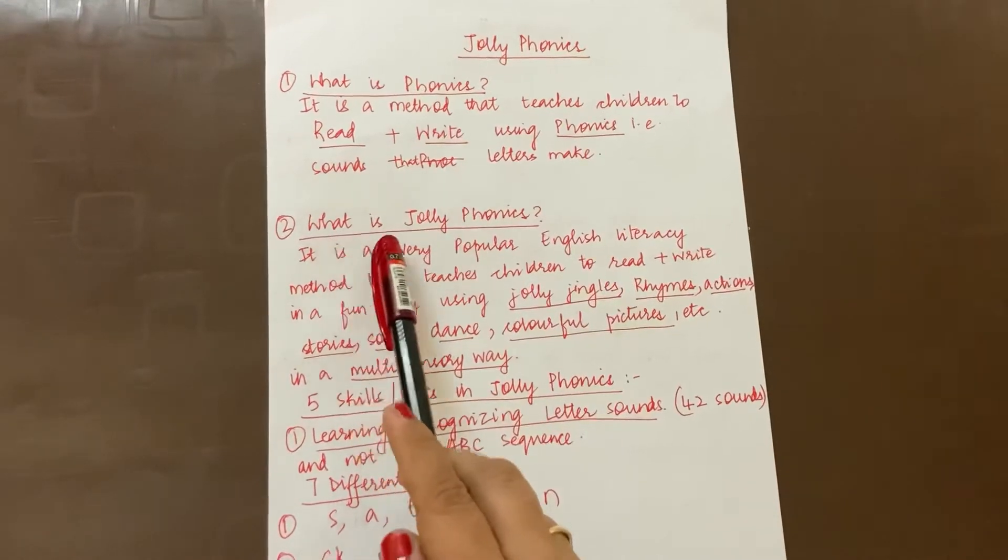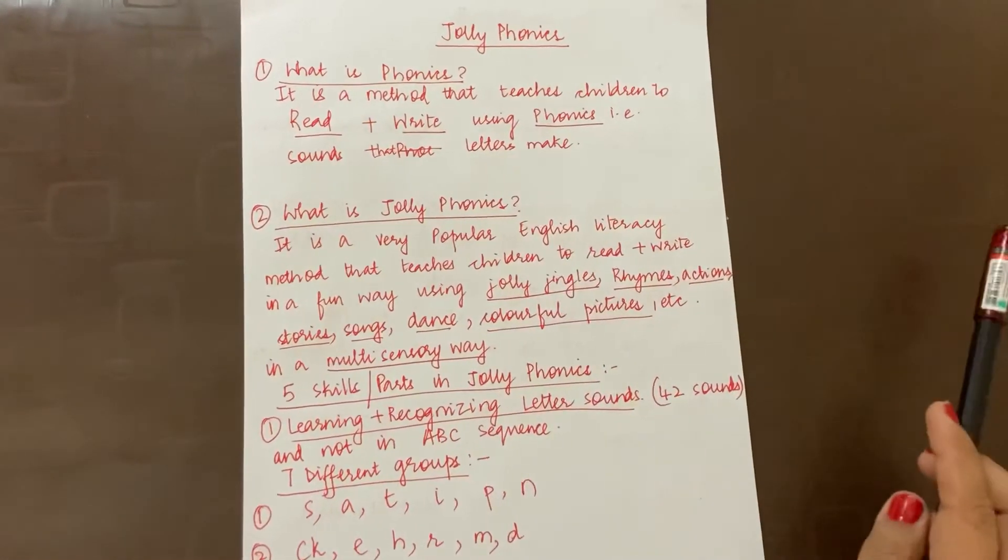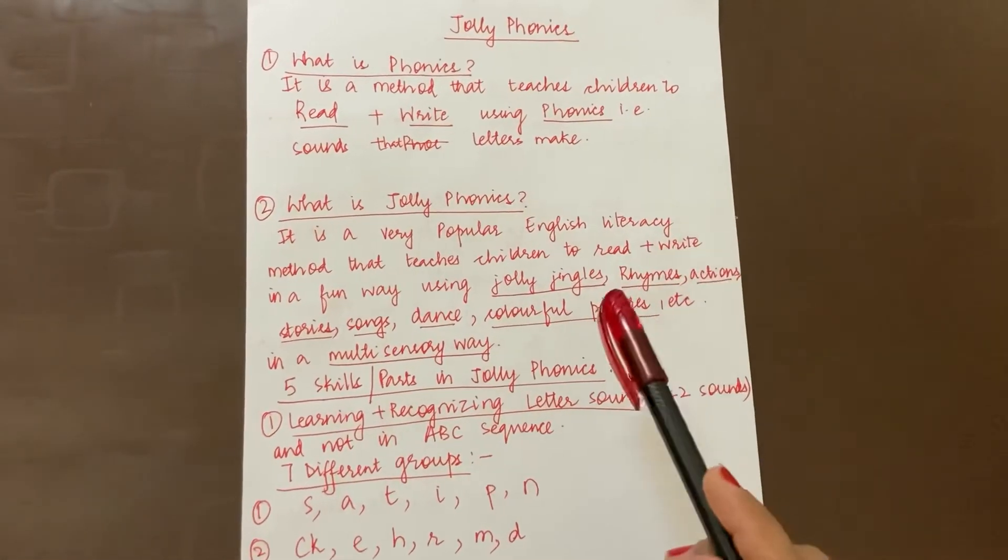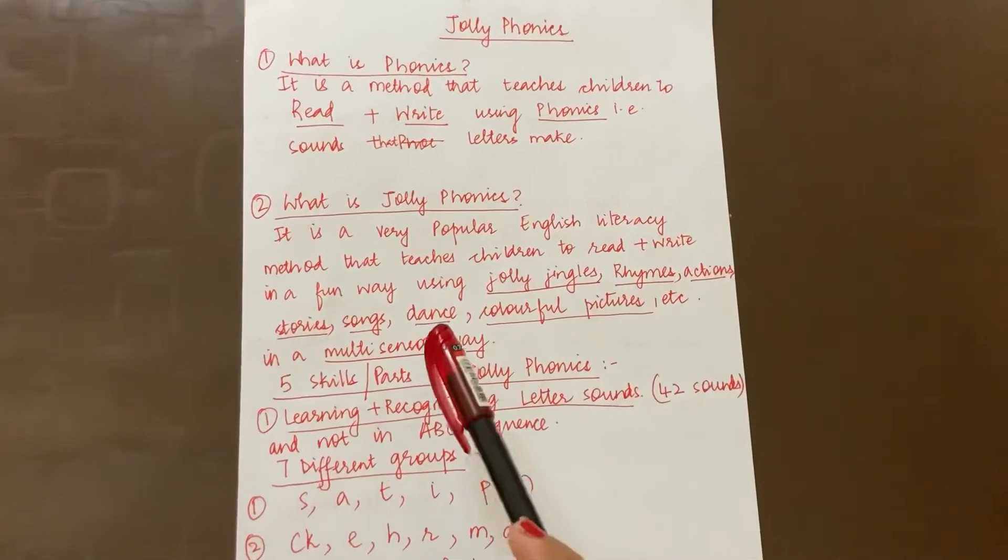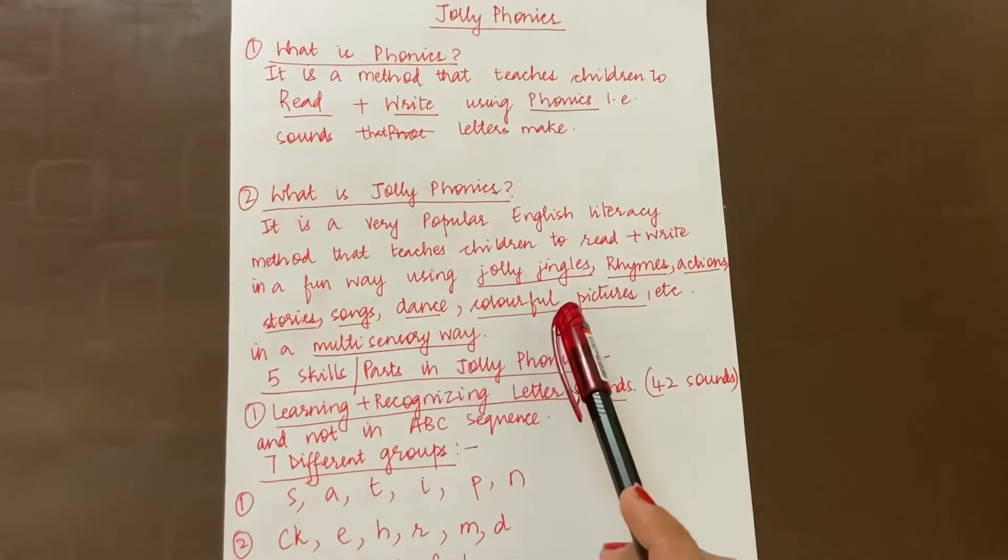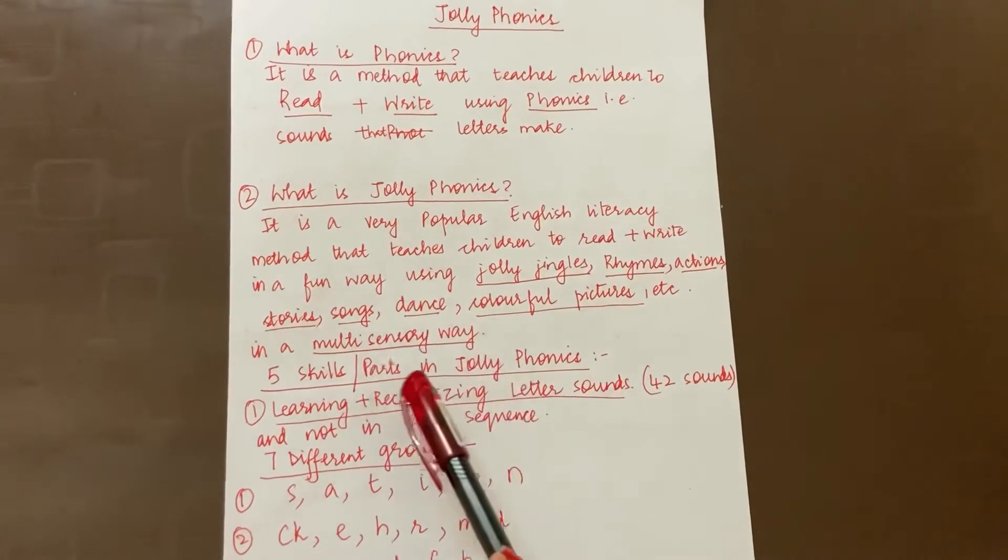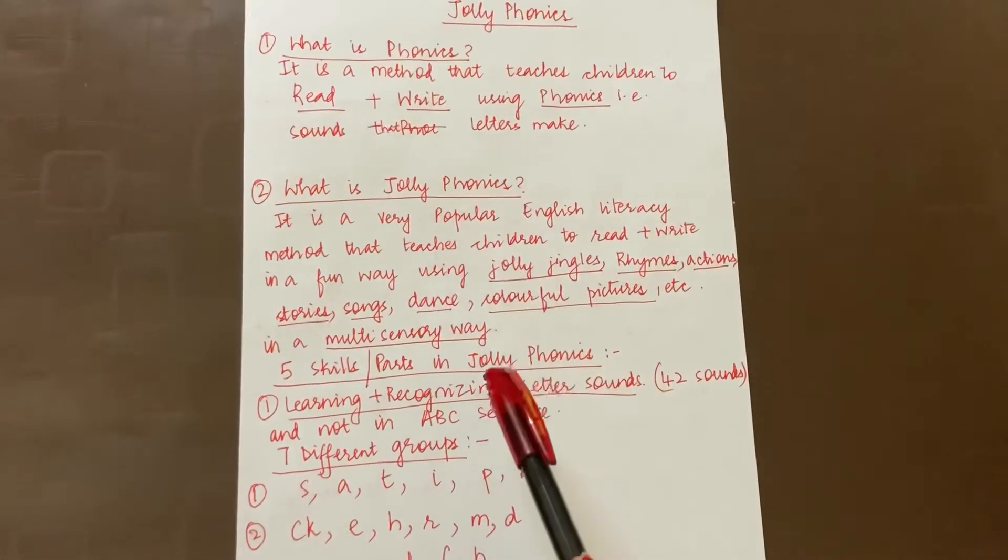Next is, what is Jolly Phonics? It is a very popular English literacy method that teaches children to read and write in a fun way using Jolly jingles, rhymes, actions, stories, songs, dance, colorful pictures, etc. They are taught the sounds in a multi-sensory way.